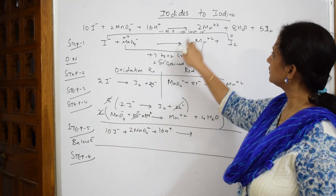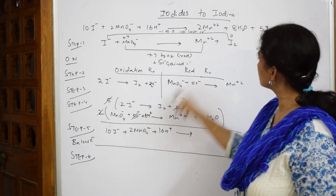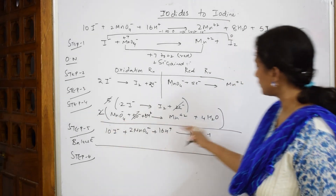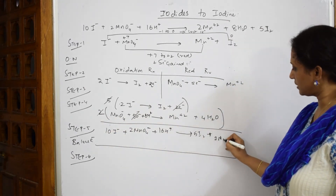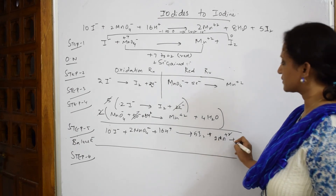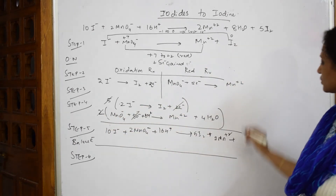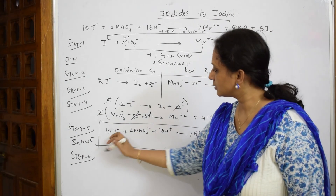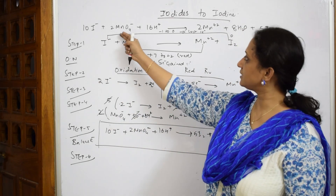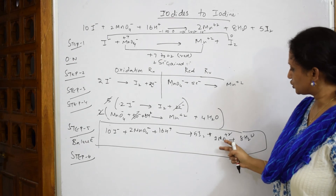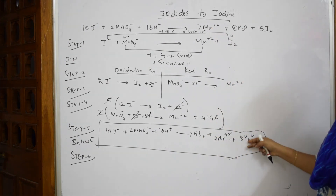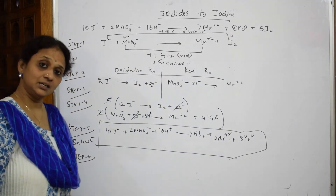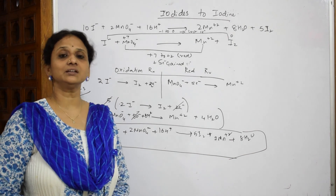In Step 6, write the overall reaction: 10 I⁻ + 2 MnO₄⁻ + 16 H⁺ gives 5 I₂ + 2 Mn²⁺ + 8 H₂O. Now check: 10 iodides — correct; 2 manganates — correct; 16 H⁺ — correct; 2 Mn²⁺ — correct; 5 I₂ — correct; 8 water molecules — correct. This is how permanganate converts iodide to iodine using the half-cell reaction method.